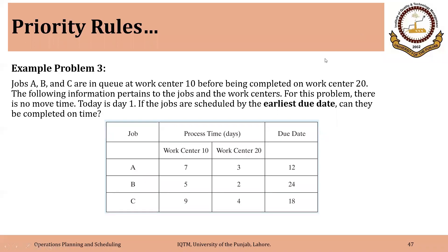So, example problem three. We are having three jobs: A, B, and C. They are in Q. I hope you are able to visualize the concept of Q from the previous example. Someone asked a question related to the previous example, so I will explain it after completing this stage.